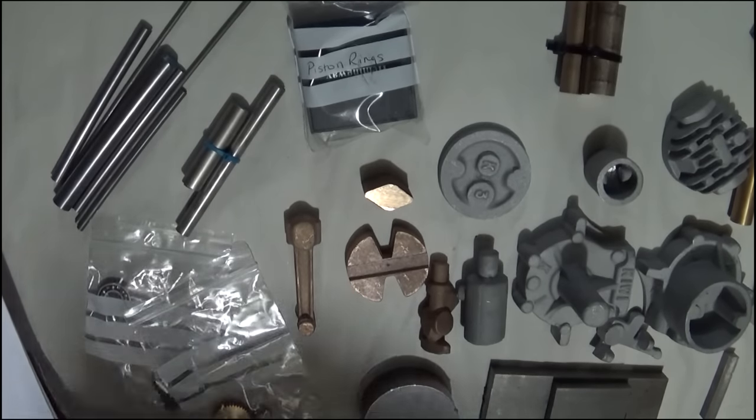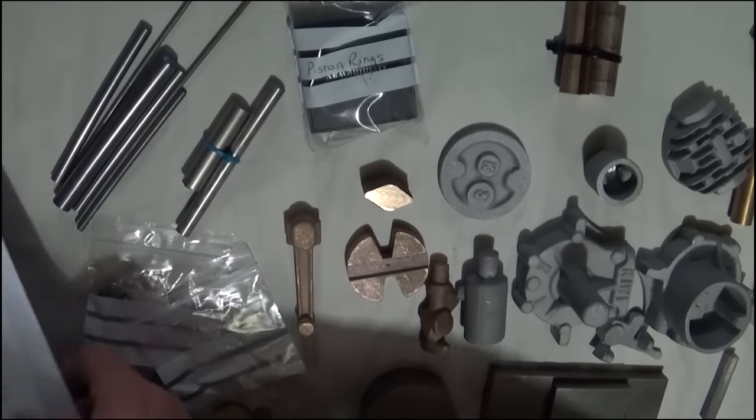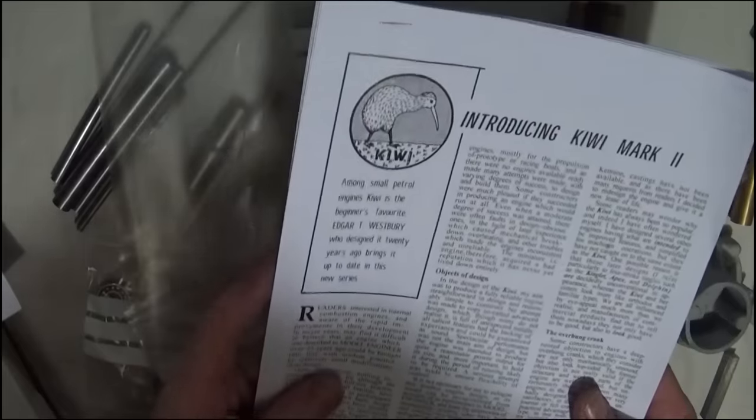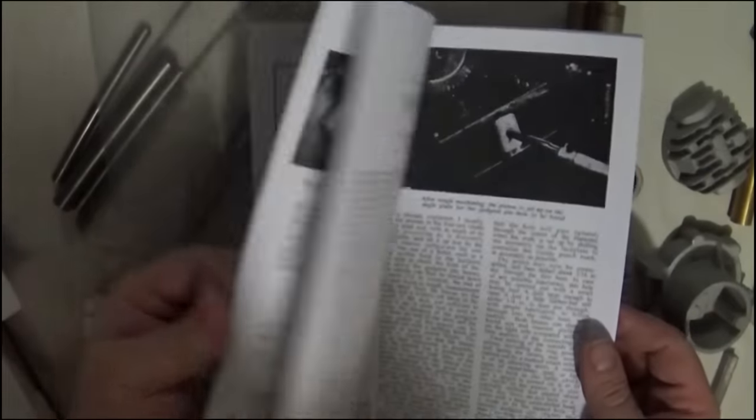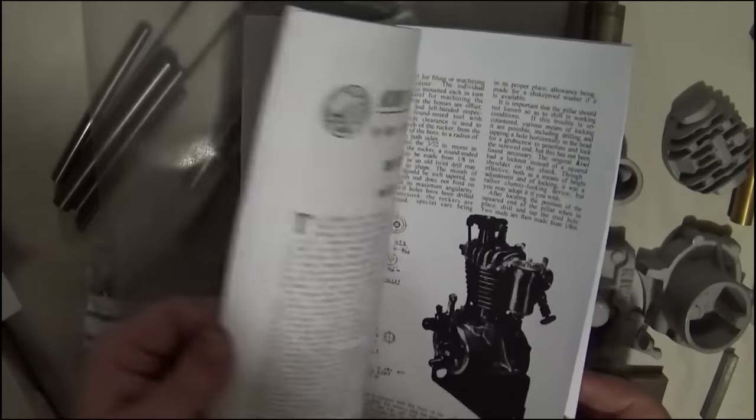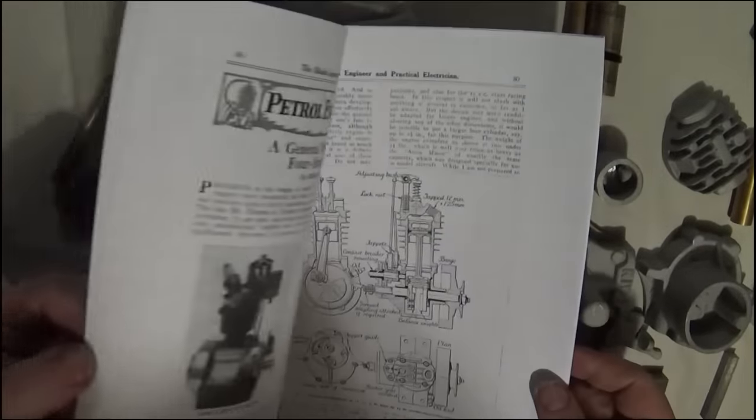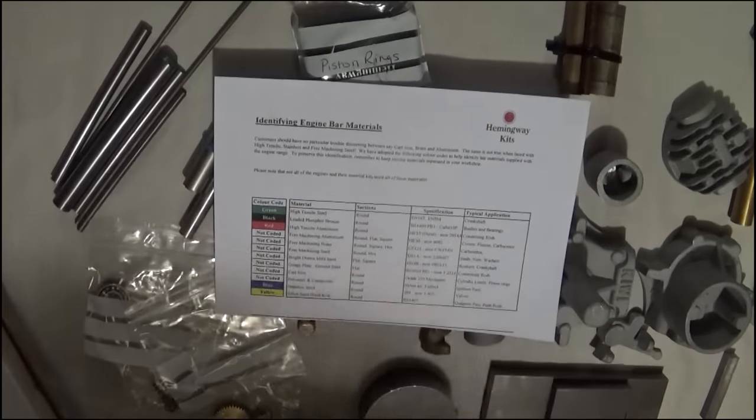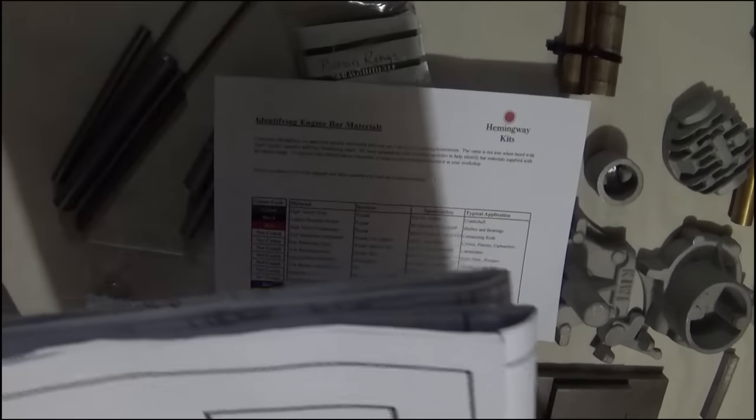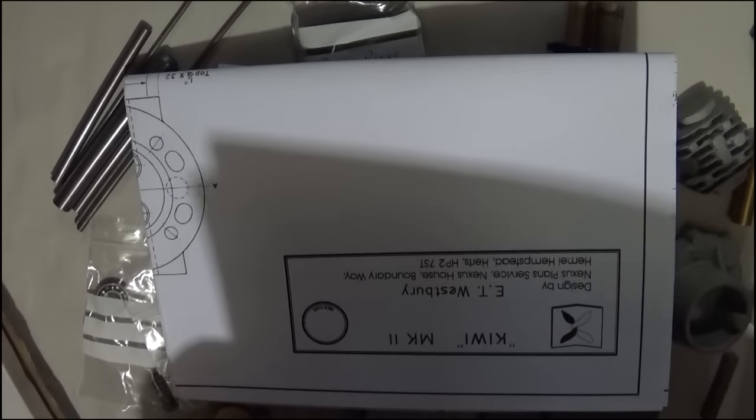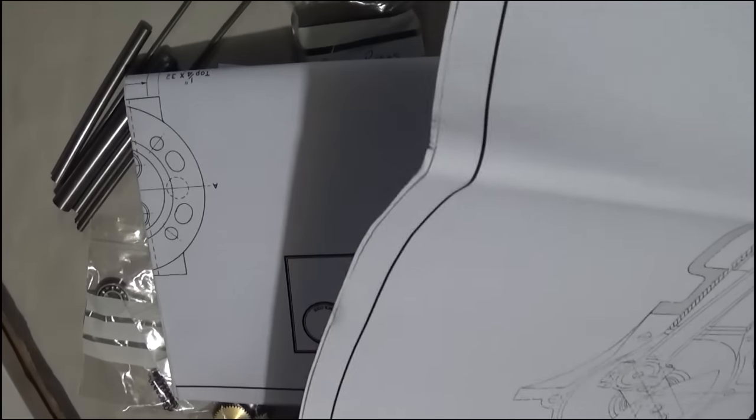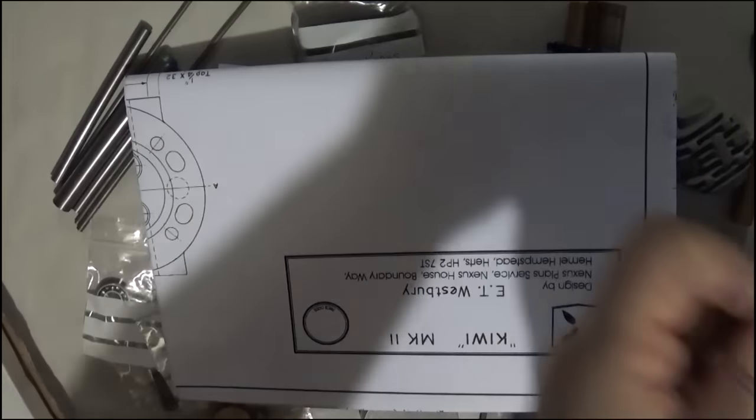I'll have a look at the castings and the bits that come with it. First of all, there's a copy of the original drawings from 1960 Model Engineer for the Mark II Kiwi and construction notes. I've read them through several times before because I have these original magazines back in Tasmania, but I've got a photocopy of them. It's fairly considerate of them to put them in. There's a sheet of paper with two drawings.